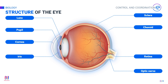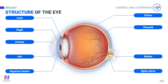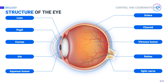The eye contains two chambers — one in front of the lens and one on the back side of the lens. These chambers contain fluids. The anterior chamber contains aqueous humor, which provides nutrition to the lens. The fluid present in the chamber posterior to the lens is the vitreous humor. The vitreous humor helps to bend light onto the retina and also keeps the lens in place.